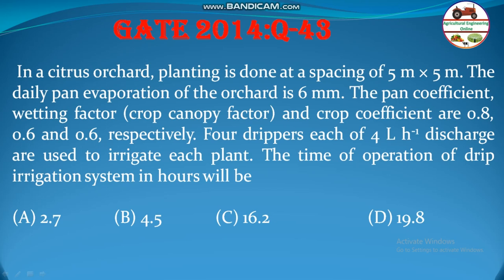Hello students, welcome to my channel. This is a problem from GATE 2014, Question 43, from irrigation and drainage engineering. The problem: in a citrus orchard, planting is done at a spacing of 5m × 5m. The daily pan evaporation is 6mm. The pan coefficient, canopy factor, and crop coefficient are 0.8, 0.6, and 0.6 respectively. Four drippers, each of 4 liters per hour discharge, are used per plant. The time of operation of the drip irrigation system in hours will be: 2.7, 4.5, 16.2, or 19.8.